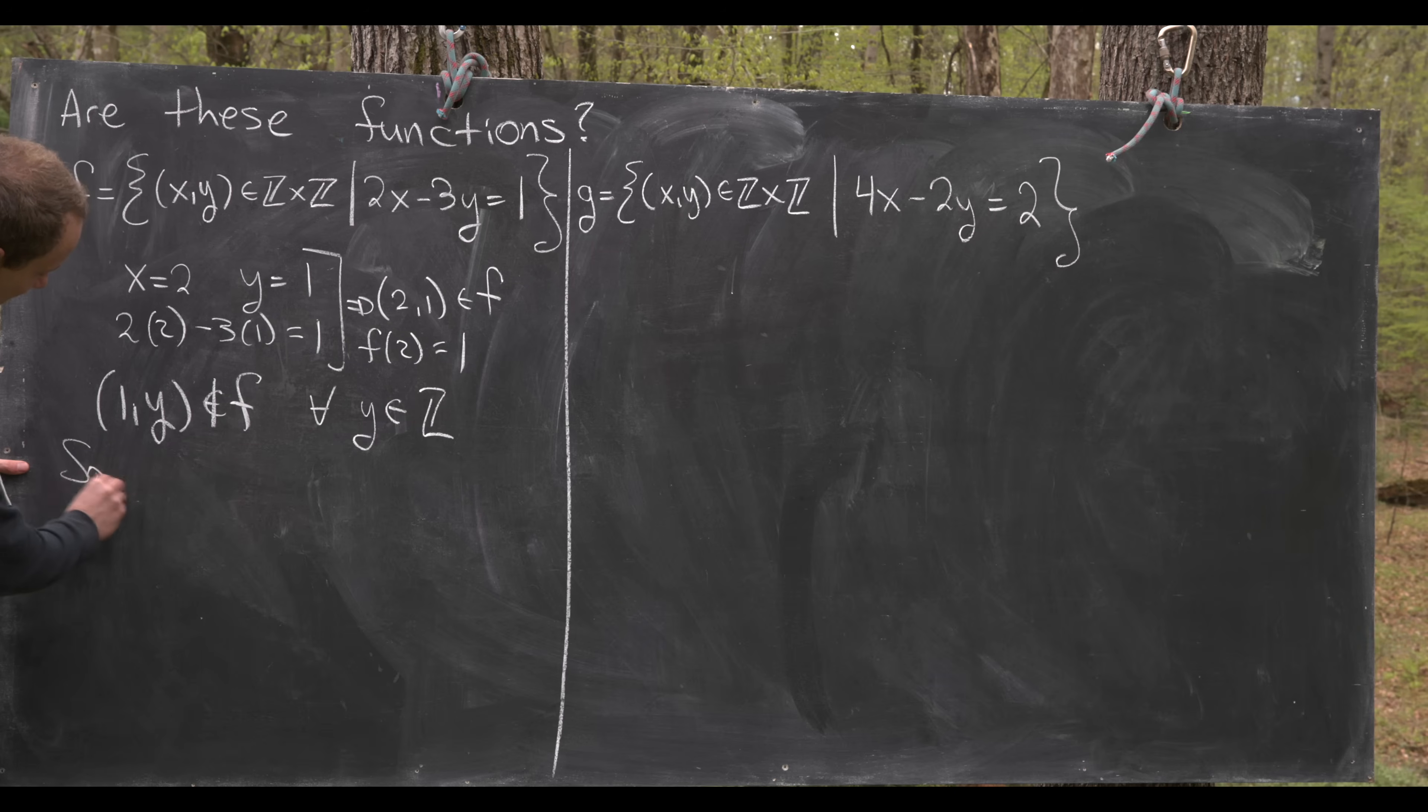Well let's check it like this. So let's suppose f(1)=y but then that means that 2 times 1 minus 3 times y equals 1 given that's the condition.